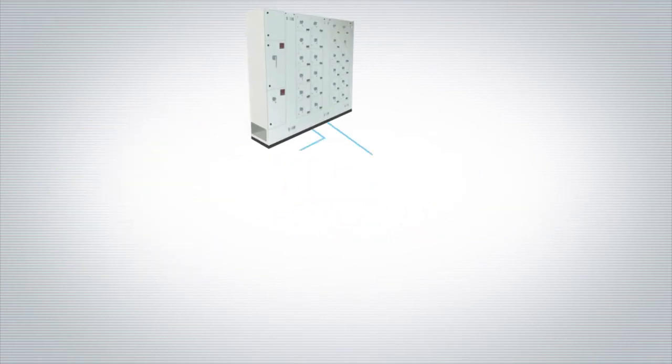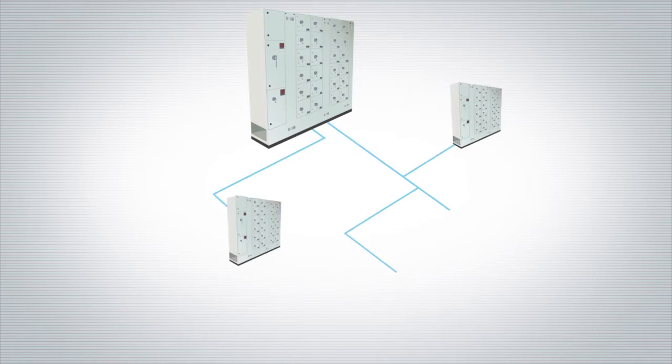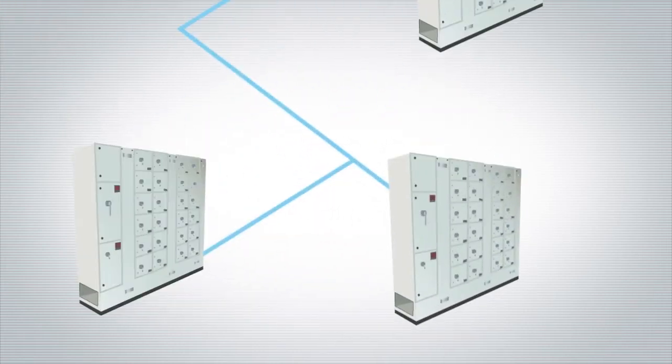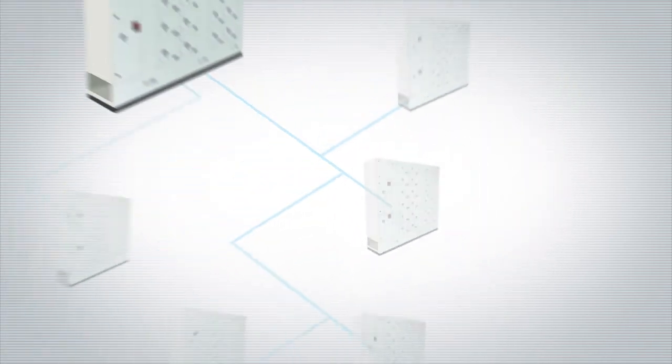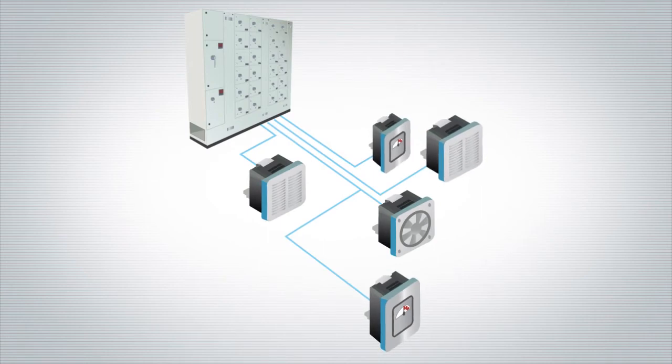Electricity is supplied through a set of distribution boards located within your building. Heavy consumers such as HVAC and production lines are powered from dedicated circuits, creating a complex network of boards and equipment to monitor.